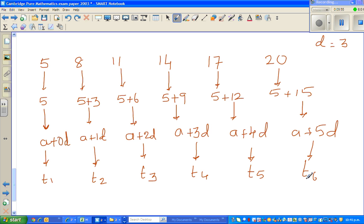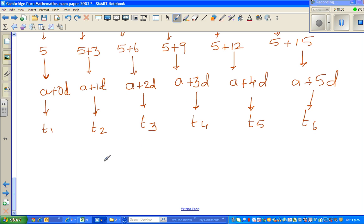So if you have got the 6th term, you can write a plus 5d. Now if you understand the pattern, if someone is asking you what is t20, I can say it is a plus 19 times d, or a plus 20 minus 1 times d. What is t99? t99 would be a plus 99 minus 1 times d, or that is a plus 98d.